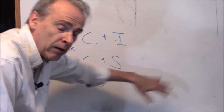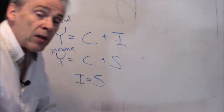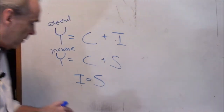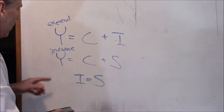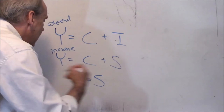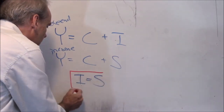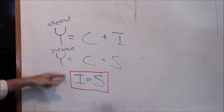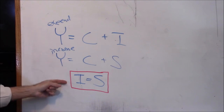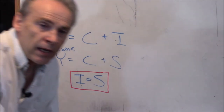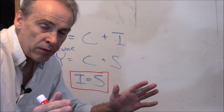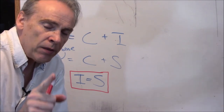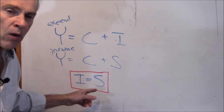Investment equaling savings holds if we get rid of the government sector and foreign trade — the same concept would still be true otherwise, just more complicated to explain. There are no economists on the face of the earth who disagree that this is true. There's not going to be any disagreement over that among all the various schools of thought. What there is disagreement about — listen carefully — is the process by which they are equated.